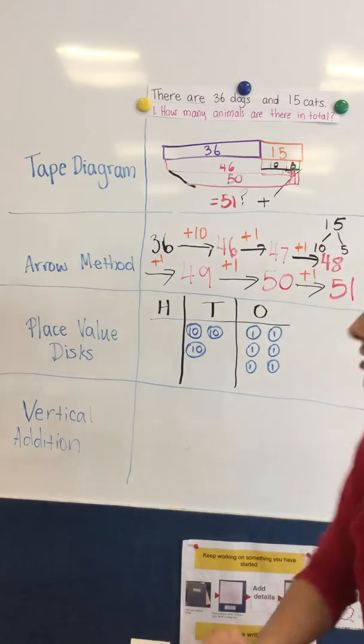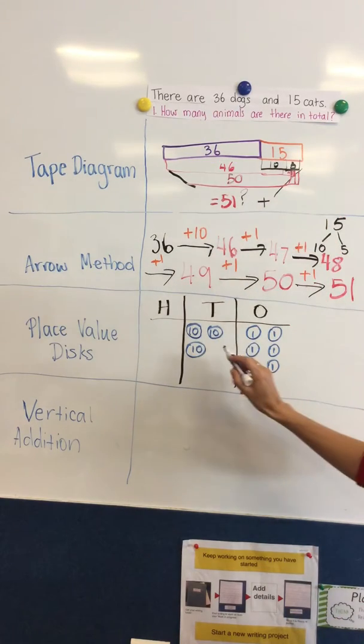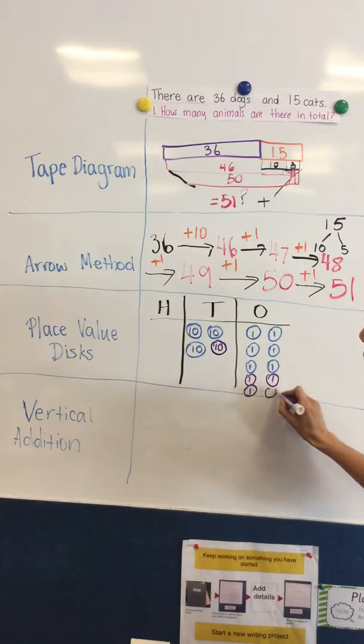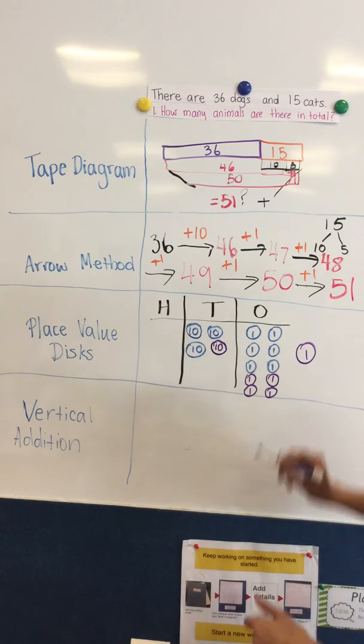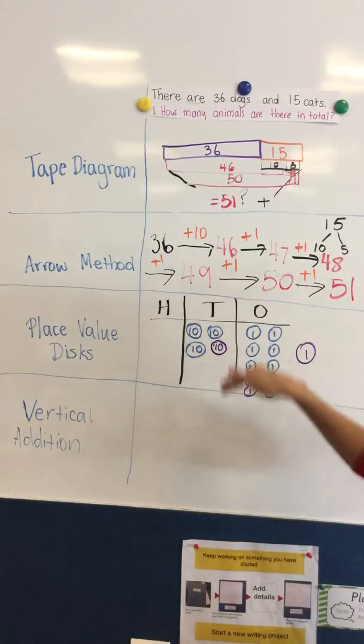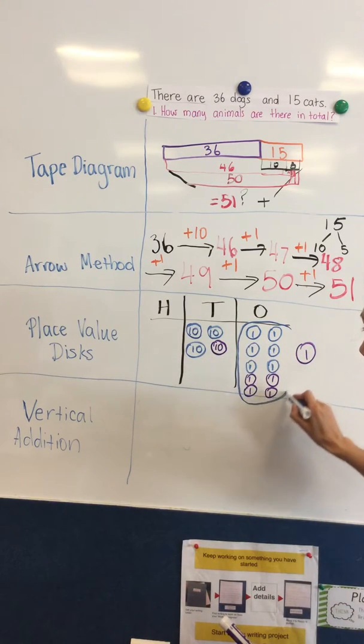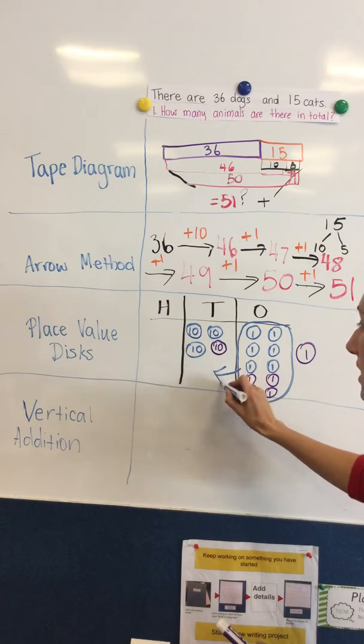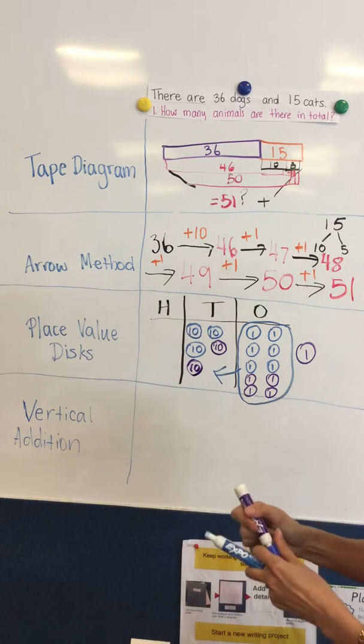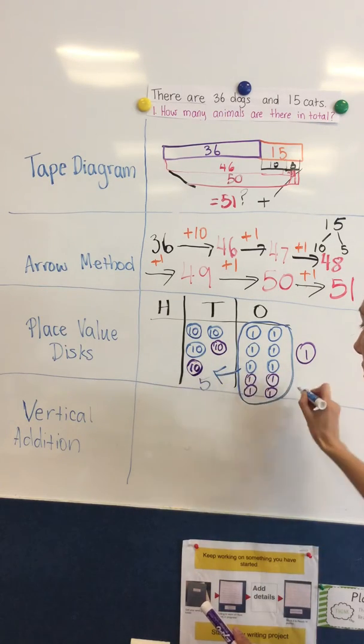And then I would draw my 15, one 10 and five ones. I quite like drawing these numbers in as if it was a tens frame, and then that way I can see when I've got a full 10, when there is a full 10 altogether. We know we need to bundle them and then swap them for another 10. So now I can see I've got five tens and one left over, so then the answer would be 51.